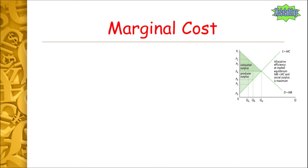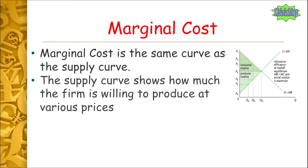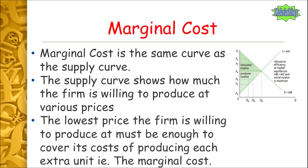Now let's look at our marginal cost curve. We know already our marginal cost curve is the same as our supply curve. The supply curve shows how much the firm is willing to produce at various prices in a given period of time. The lowest price the firm is willing to produce must be enough to cover its costs of producing each extra unit — in other words, the marginal cost. A firm is not going to bother producing a good if they're not able to cover their costs. They need to at the very least be able to cover their variable costs to be willing to produce the good. If you're going to make more goods, you're going to have to be buying more variable costs, so their costs are going to be increasing each and every time. That's why the more goods are produced, the more the marginal cost increases. From QA to QB, there's more cost in producing QB, therefore the marginal cost is increasing.